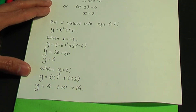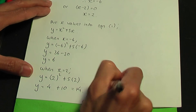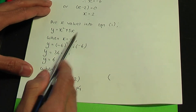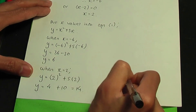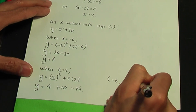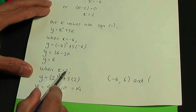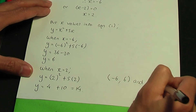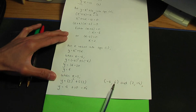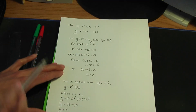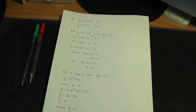So I have two intersection points for part b. The first point has coordinates x equals minus 6 and y equals 6. The second point has coordinates x equals 2 and y equals 14. That completes part b and concludes this video. I hope you found it helpful — do practice related questions, and thank you for watching.